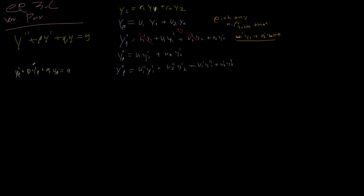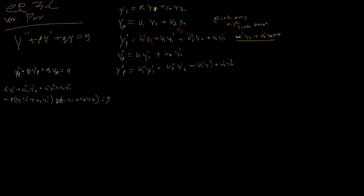Essentially what we get, after expanding and plugging in, is: u1·(y1'' plus p·y1' plus q·y1) plus u2·(y2'' plus p·y2' plus q·y2) plus u1'·y1' plus u2'·y2' equals g. Both y1 and y2 are solutions to the homogeneous equation, so we can rearrange this.